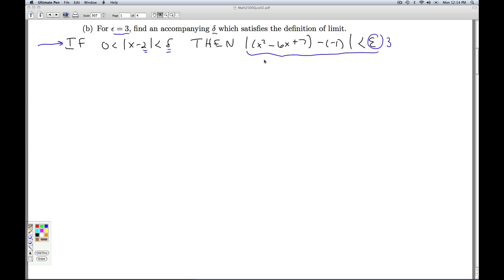First, we can simplify this inequality. x squared minus 6x plus 7 minus negative 1 is the same as x squared minus 6x plus 8. So I need to solve the absolute value of x squared minus 6x plus 8 is less than 3. Knowing what I know about absolute value, that means negative 3 is less than x squared minus 6x plus 8 is less than 3. This breaks down into two inequalities, a compound inequality. Negative 3 is less than x squared minus 6x plus 8, and I'm going to intersect that because it also has to be true that x squared minus 6x plus 8 is less than 3.